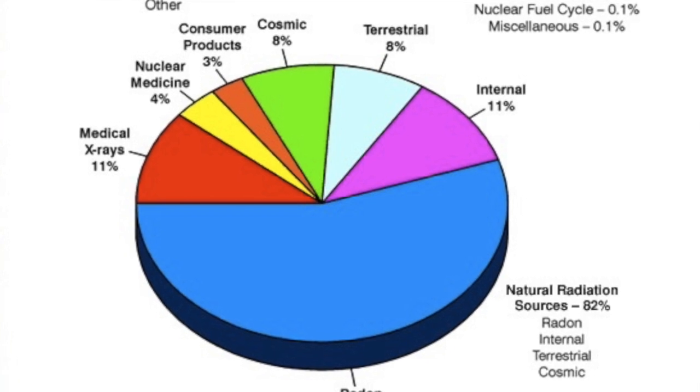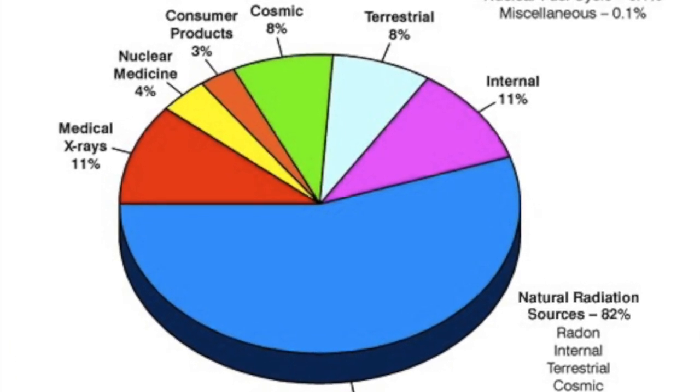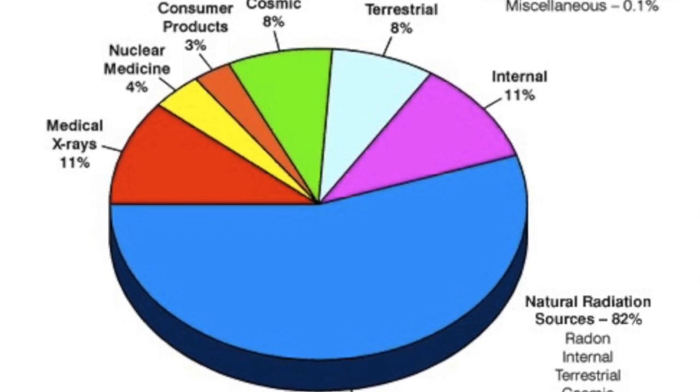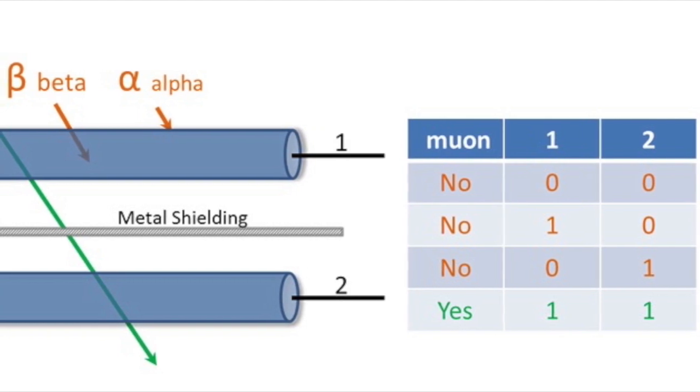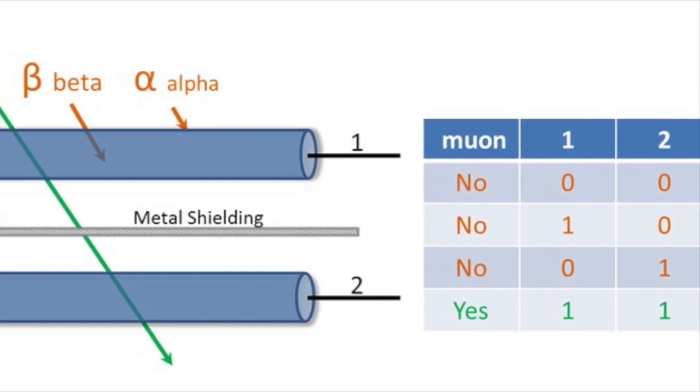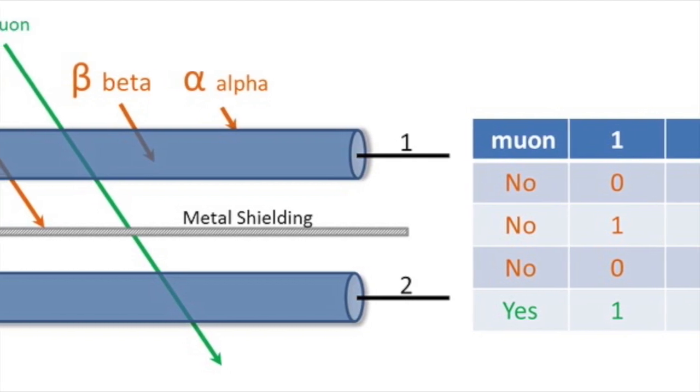The problem with using a radiation detector for cosmic ray observation is the large amount of background radiation due to natural decay of matter. To overcome this problem, the coincident detection method is used. That is, at least two detectors are needed, placed one above the other.